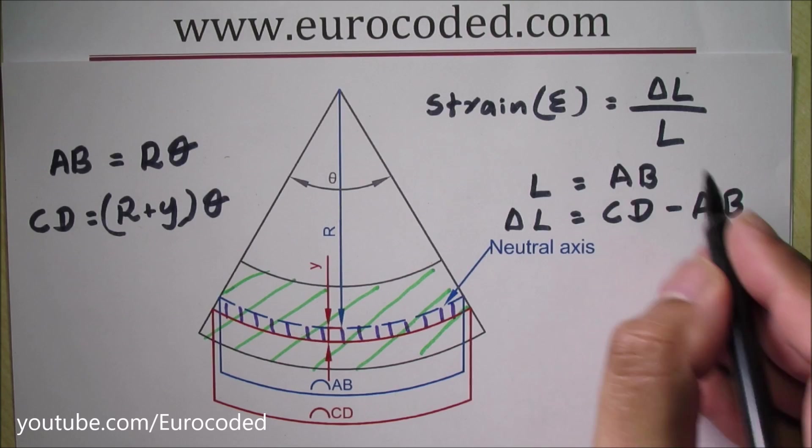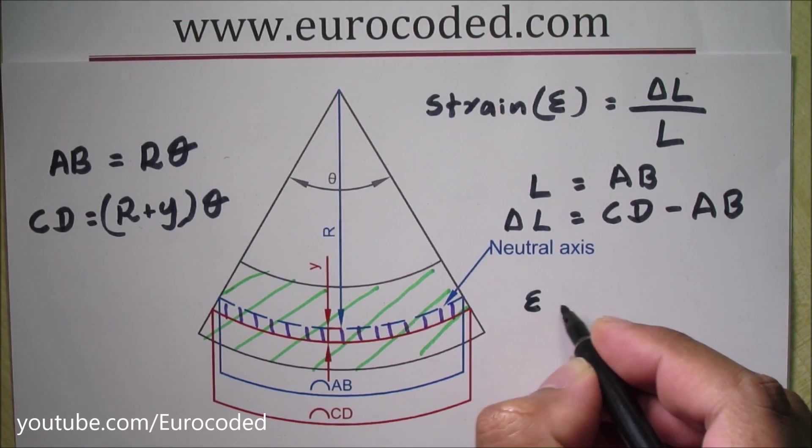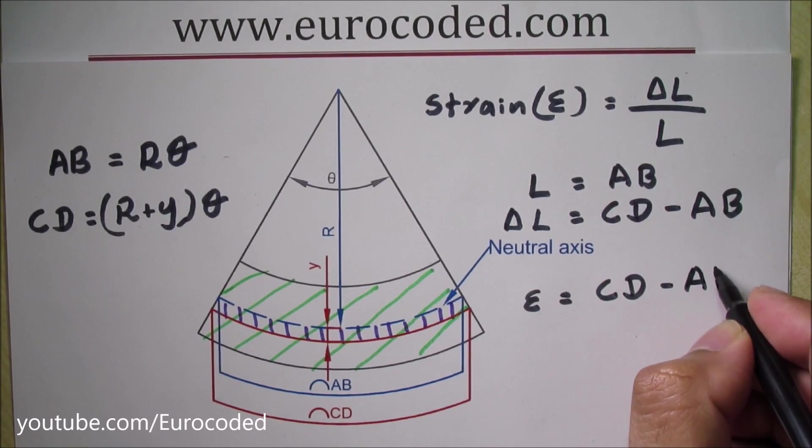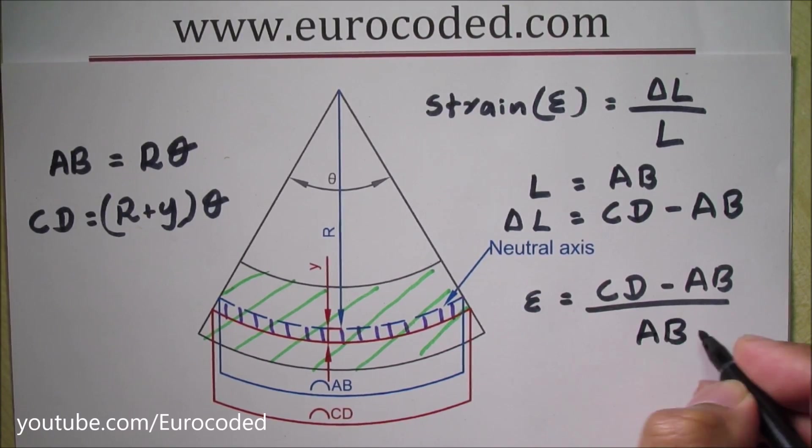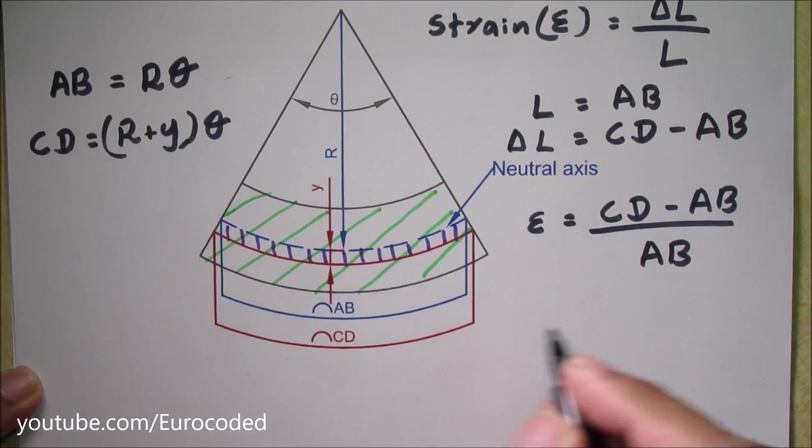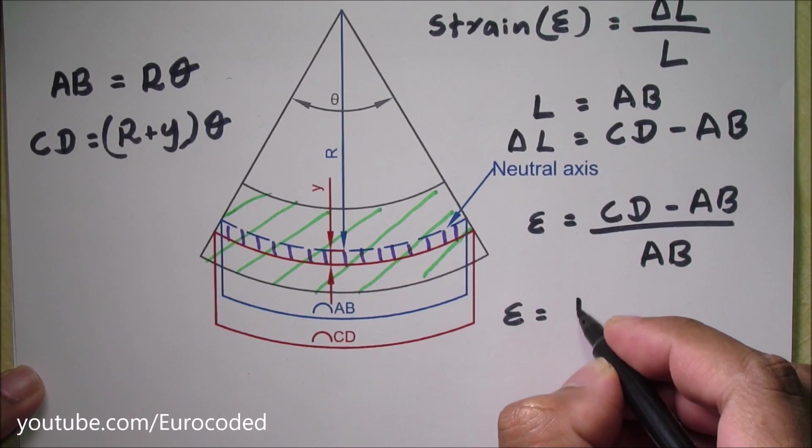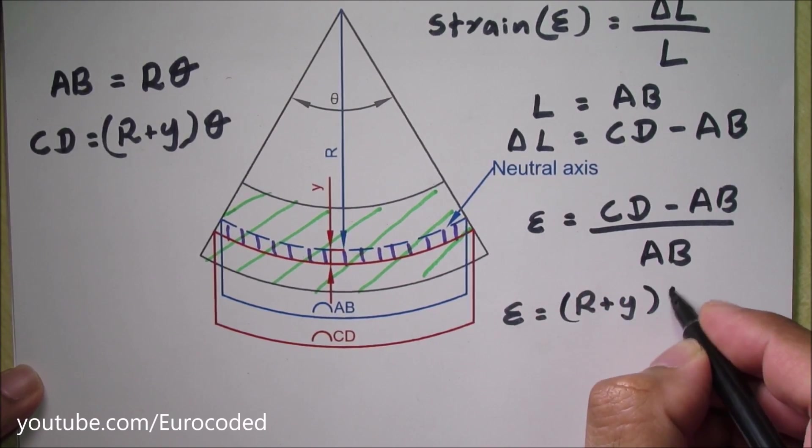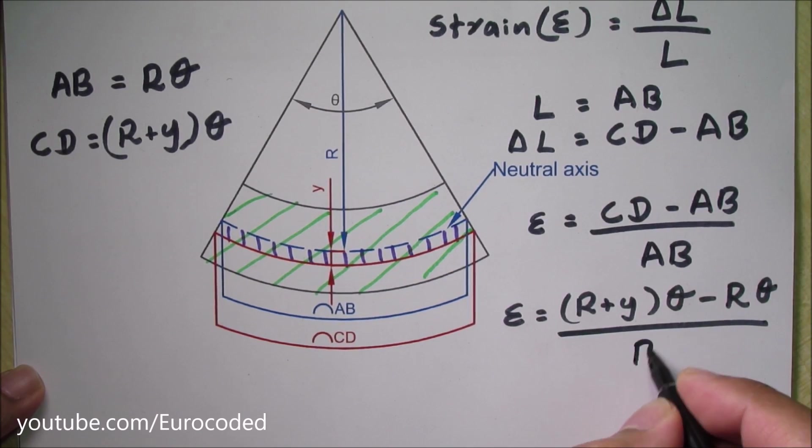Now we can plug this into this equation and we can write strain is equal to CD minus AB over AB. And then we can plug in these expressions into this equation. Therefore we can write strain is equal to R plus Y times theta minus R theta over R theta.